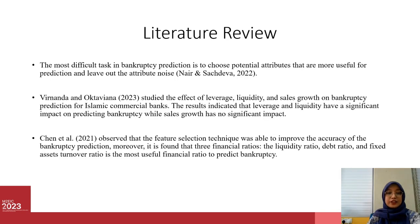For the literature review, I have included past research regarding ACO, Hellinger distance, and attribute reduction in the paper. Here in the slide, I want to highlight the literature review on attribute reduction. In 2022, Nair and Sajdiva found that the most difficult task in bankruptcy prediction is to choose potential attributes that are more useful for prediction and to reduce attribute noise.